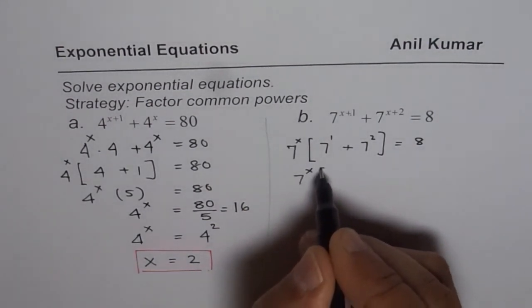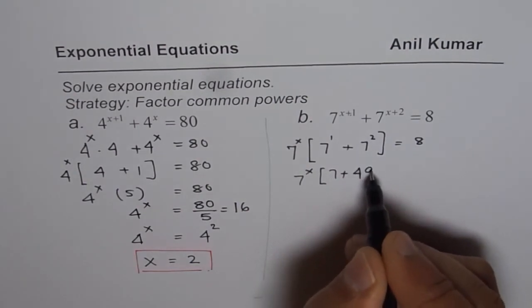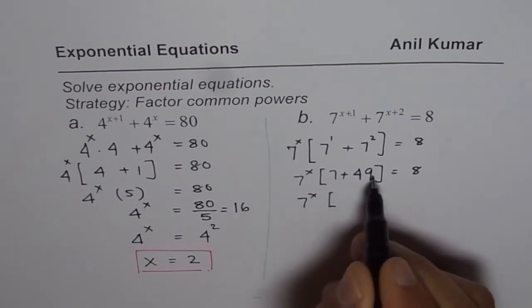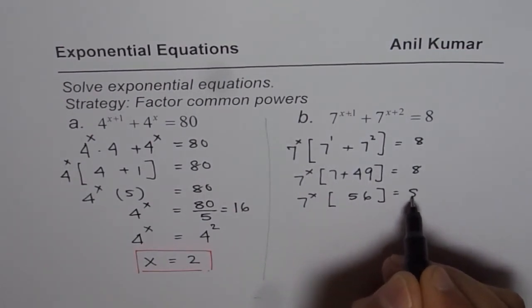It is 7 to the power of x equals 7 plus 7 squared is 49, which is 8. So 7 to the power of x is, once you add them, you get 56, equals 8.